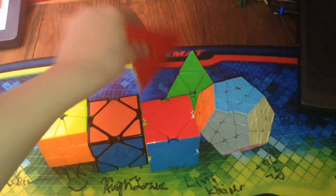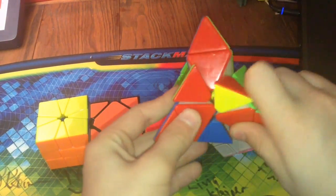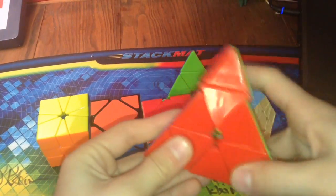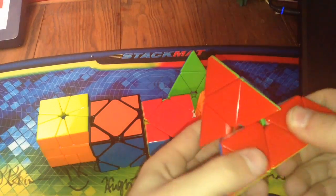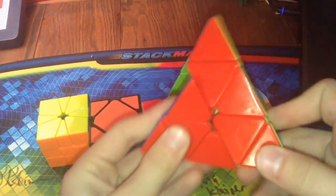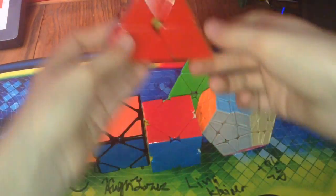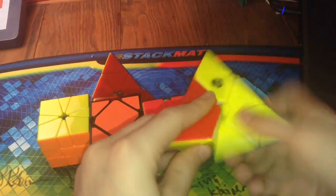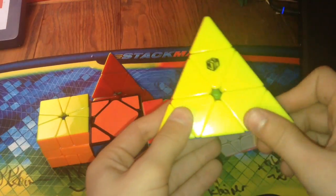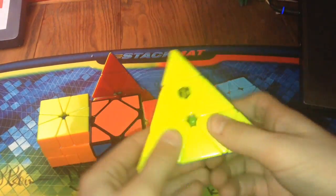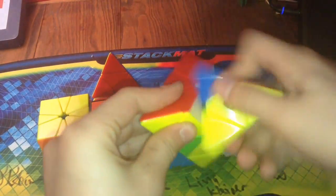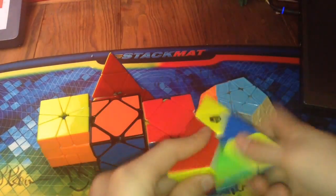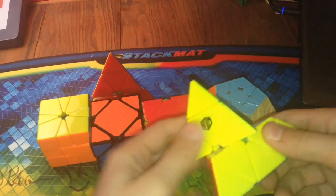Next, going on to Pyraminx, I have two. I have the QiYi Pyraminx. I thought this was good, and then I lubed it right before I was going to break it in. I lubed it at the competition. And then I bought the X-Man Bell Pyraminx, which is now my new main. It's magnetic. So yeah, that's why my QiYi Pyraminx is very slow. This is super fast. I love the feeling and everything.